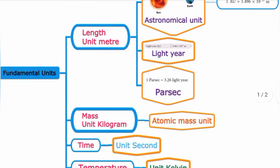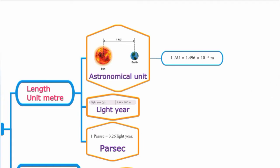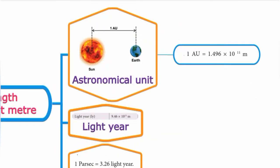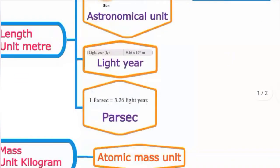The fundamental unit of length. One special unit is the Astronomical Unit, which is the mean distance from the Sun to the center of the Earth. One Astronomical Unit equals 1.496 × 10¹¹ meters.